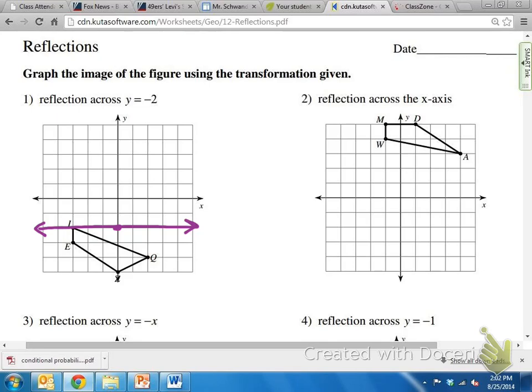So now we move to another point. Let's go to point e. So from point e to the mirror, it takes one unit. So I go one unit above the mirror, and that's where e prime will go.